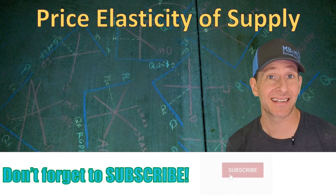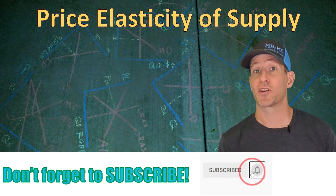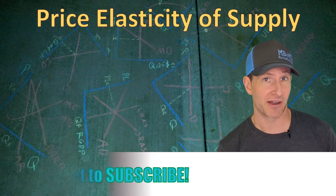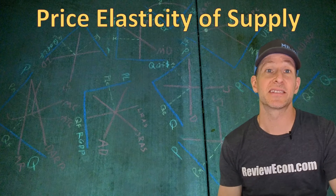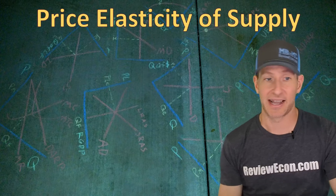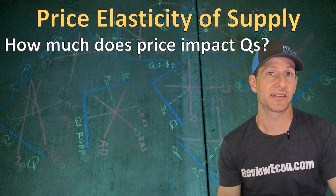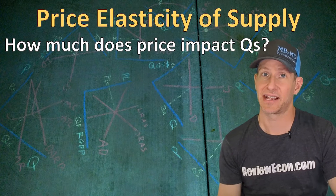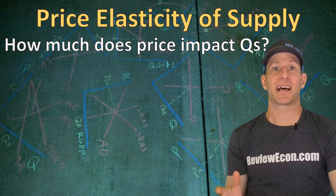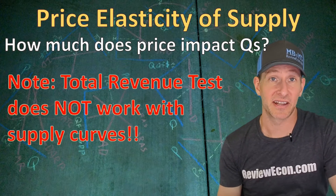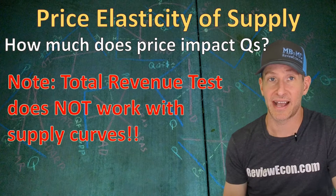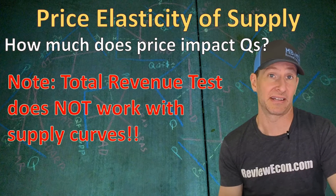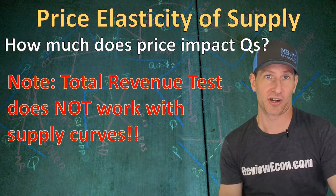In the last video we learned about the price elasticity of demand. Now we're going to be talking about three other types of elasticity that you need to know on your microeconomics exam. The first of those three is the price elasticity of supply. Just like with the price elasticity of demand, we are looking at how much a change in price impacts the quantity — in this case, the quantity supplied. A side note: when it comes to price elasticity of supply, the total revenue test will not tell us if a supply curve is price elastic or price inelastic. The total revenue test only works with demand curves.